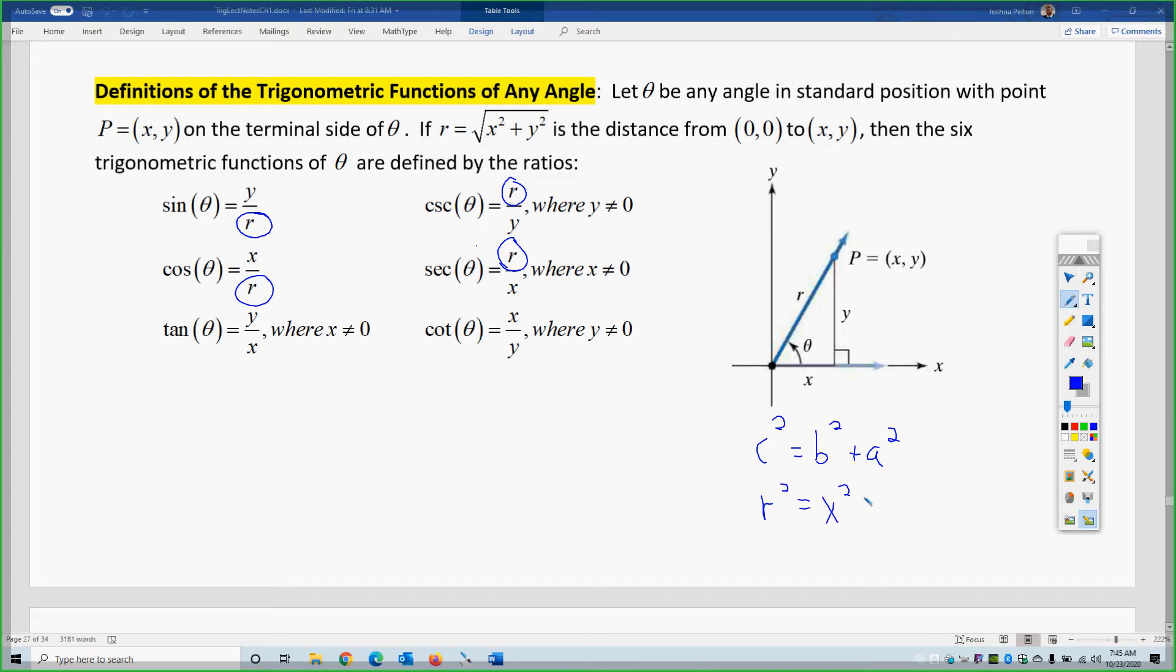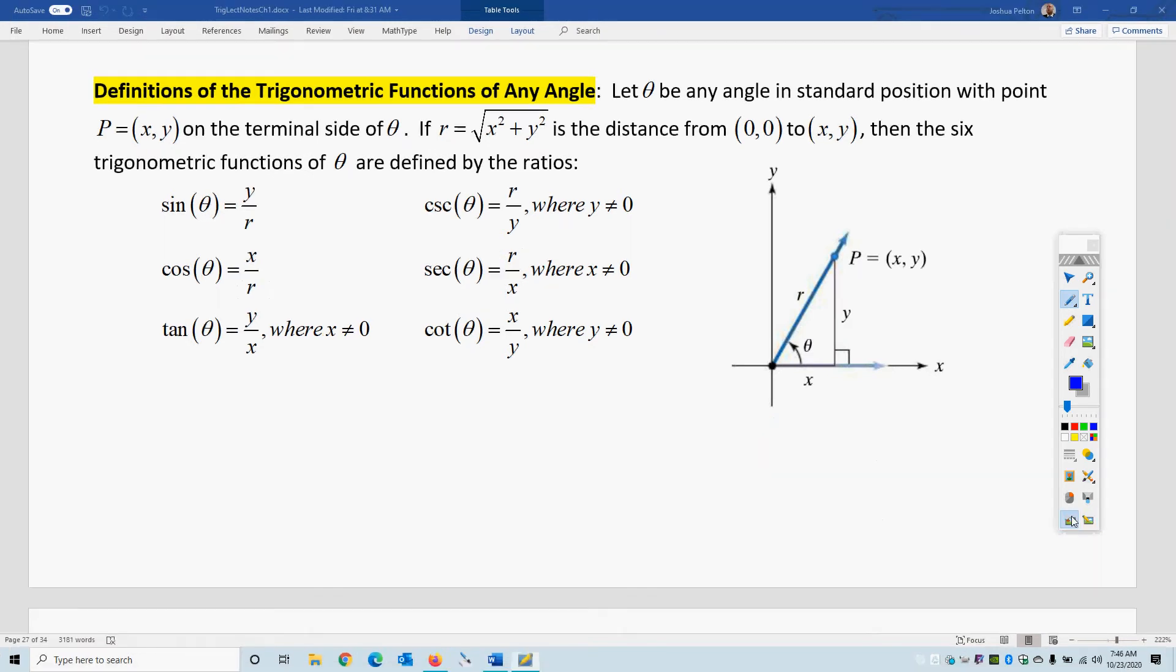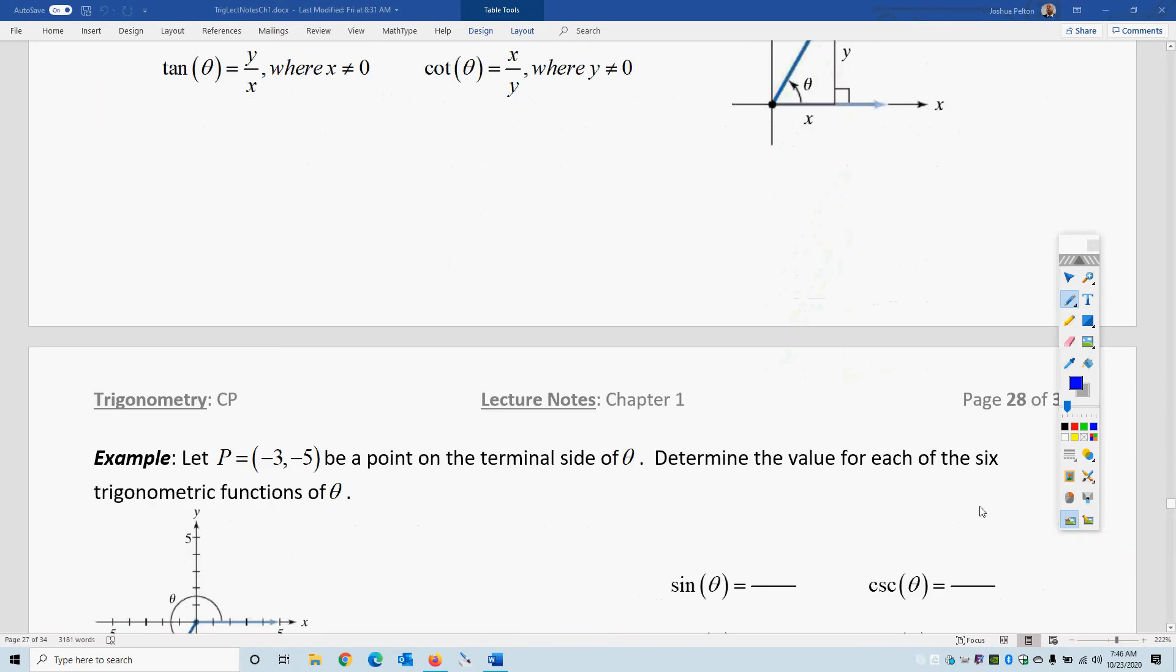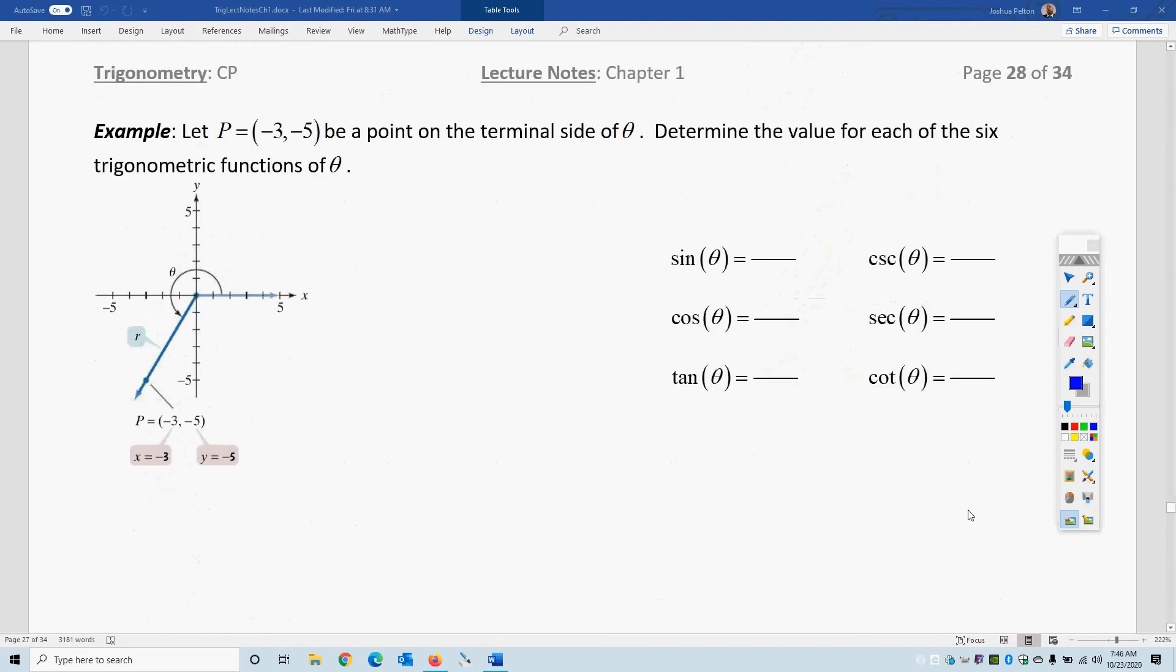If I square root, I get r equals the square root of x squared plus y squared. And we do not need to do plus or minus, because only the positive answer is valid in this case. Let's use these new trig definitions, which are just modifications of the old ones, with r radius not 1, to evaluate trig functions.